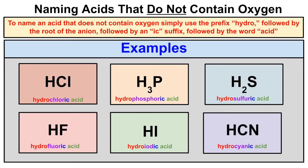Let's first start talking about how we're going to name inorganic acids that do not contain oxygen. In a first year inorganic chemistry course — high school or first year college — if a formula starts with hydrogen it's probably going to be an acid. For example, HCl is hydrochloric acid, H3P is an acid, H2S is an acid, HCN is an acid, etc.